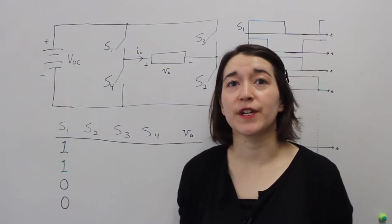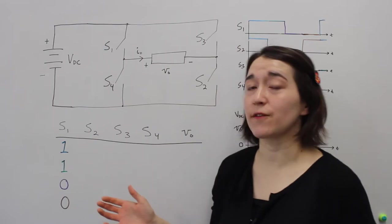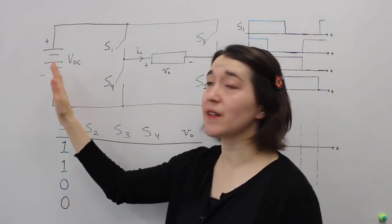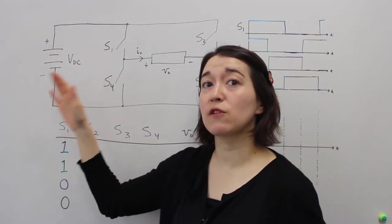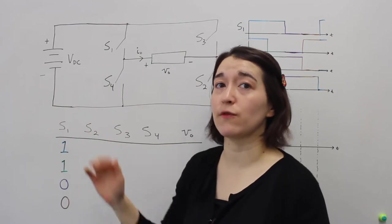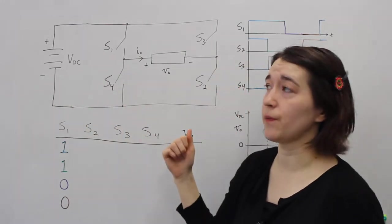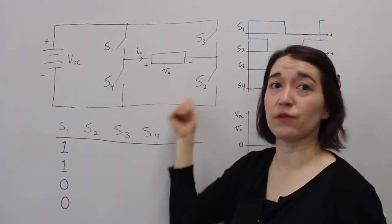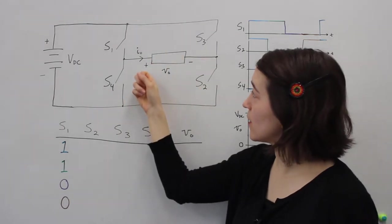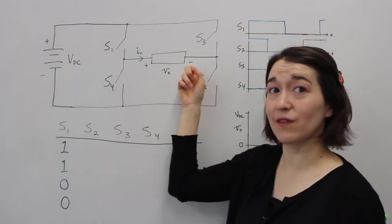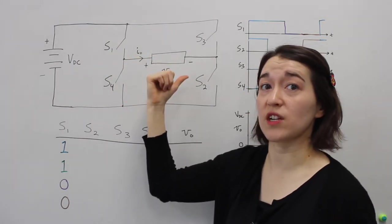Here we're talking about the full bridge inverter. The full bridge inverter can take your DC source and put the full positive and negative voltage over the load. Here's our general load and you can see the polarity is drawn positive and negative here and we're measuring the current in this direction.